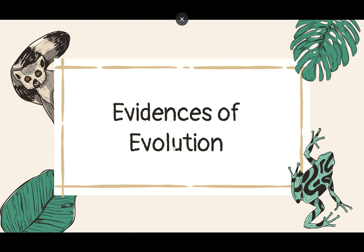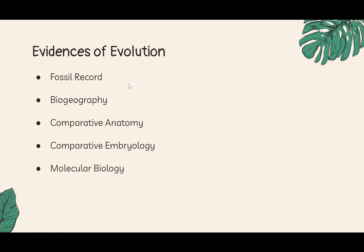Now we're going to look at the five pieces of evidence for evolution: fossil record, biogeography, comparative anatomy, comparative embryology, and molecular biology.